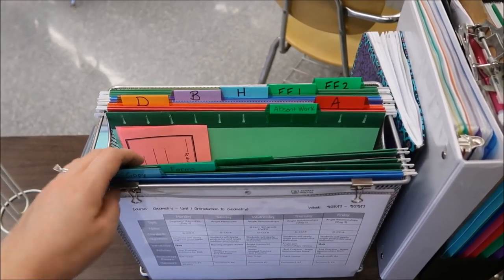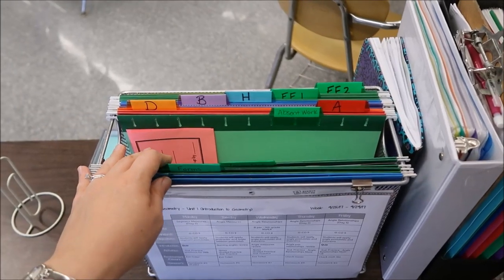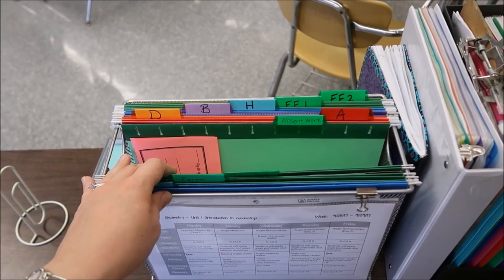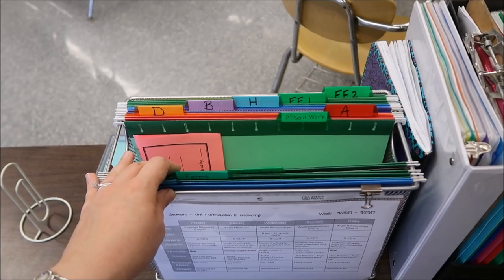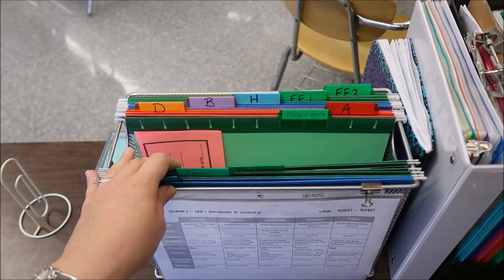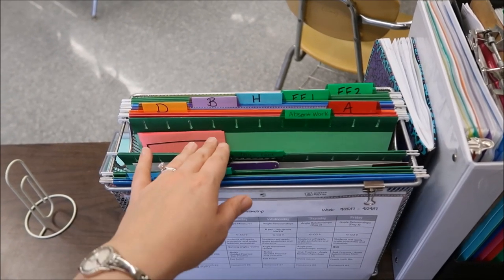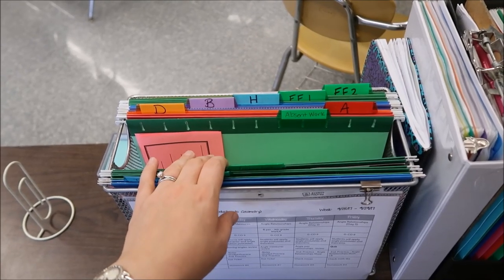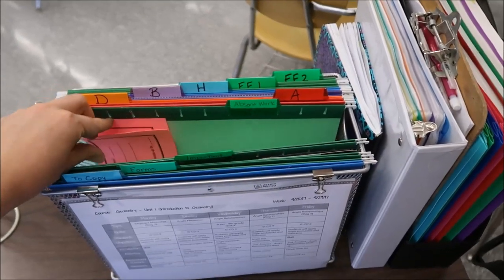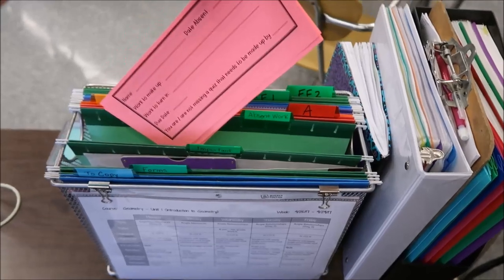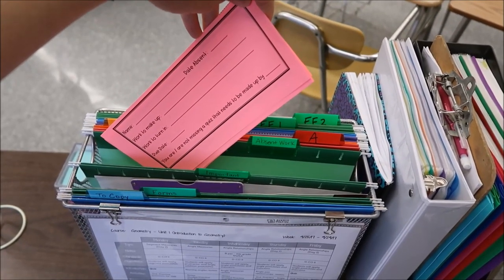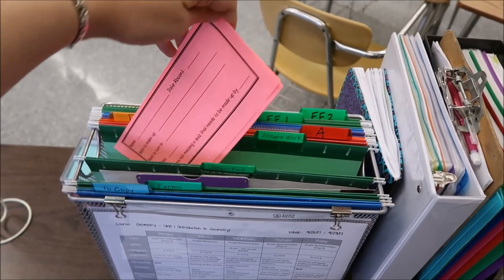My next folder is for absent work. So what I typically do is because I work off of the smart board a lot I'll print out the notes and try to print as many copies as I need for the full day. And I'll put my extra copies in here for students that are absent in my later classes. And then I also have these absent work forms just so that students know what they missed and what they have to make up.